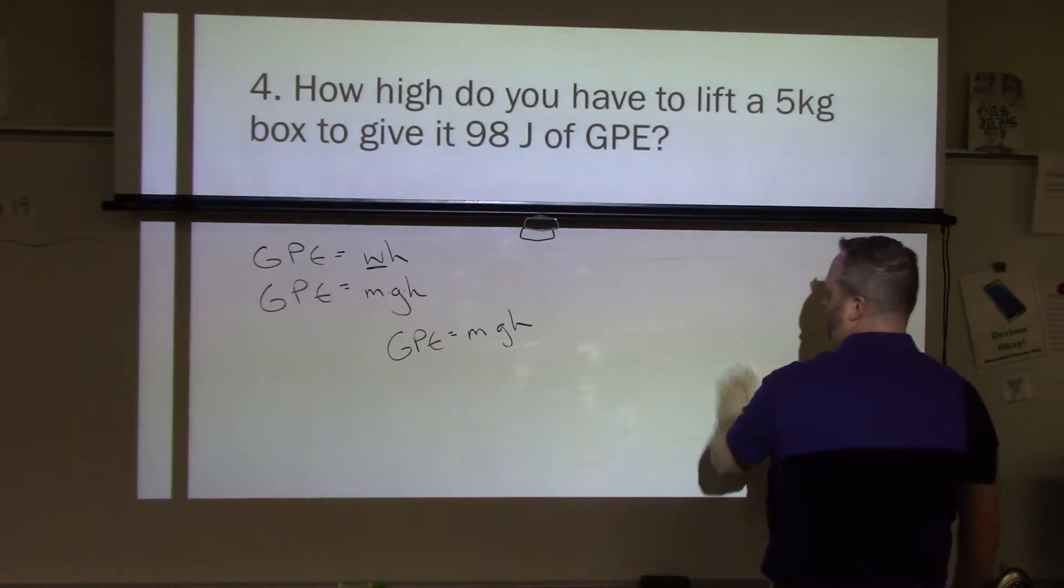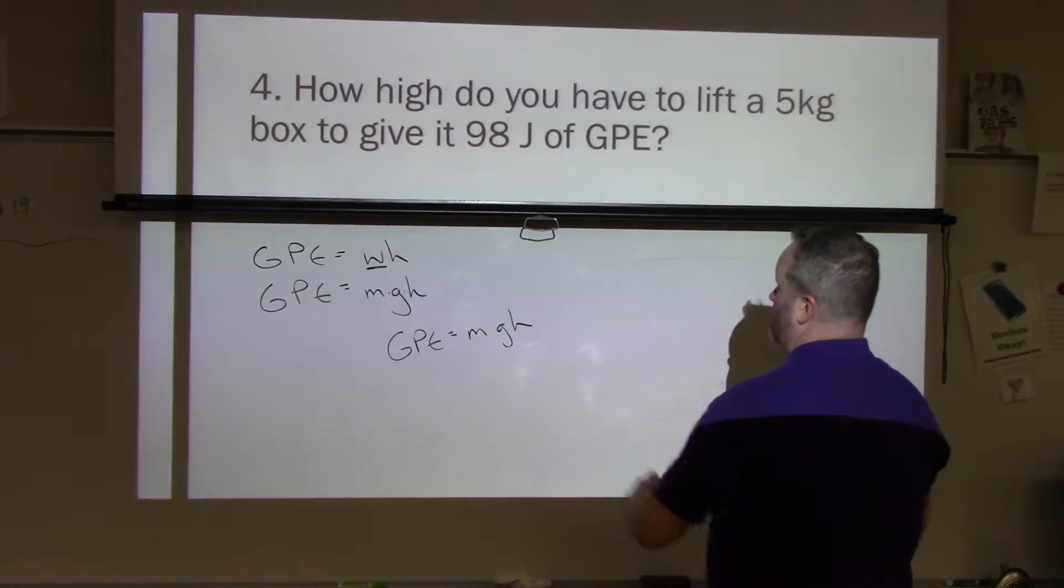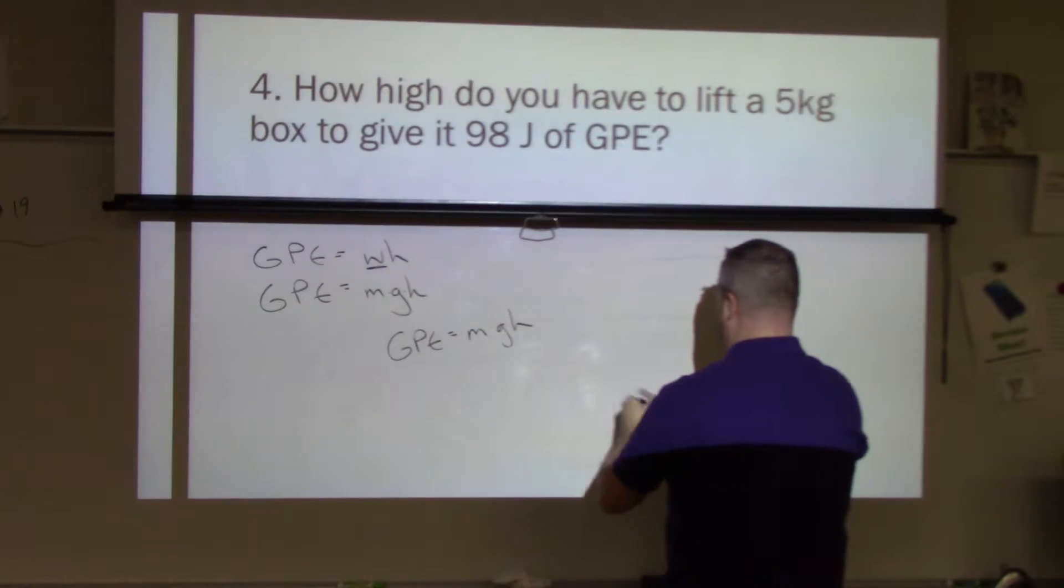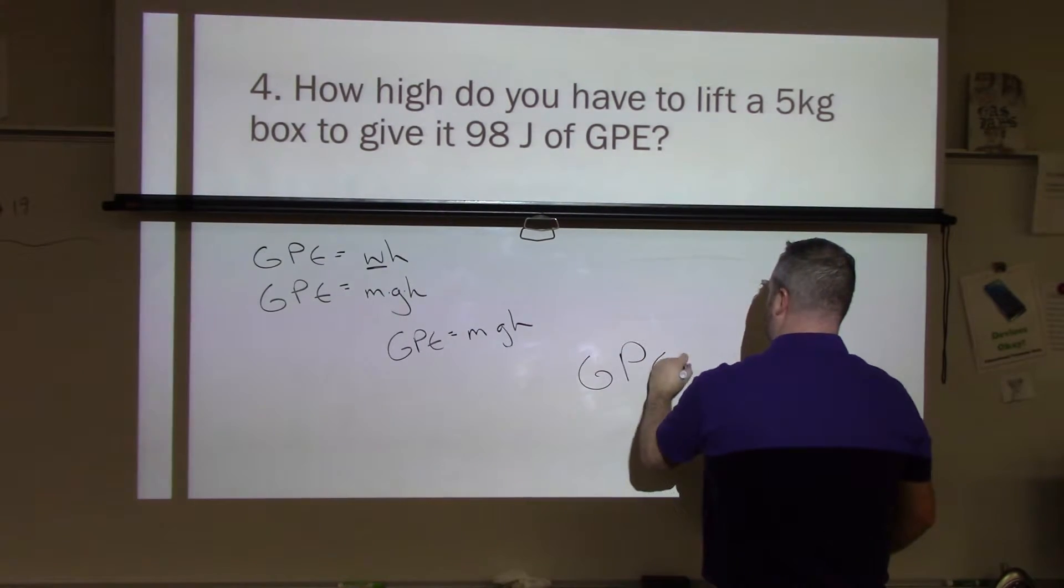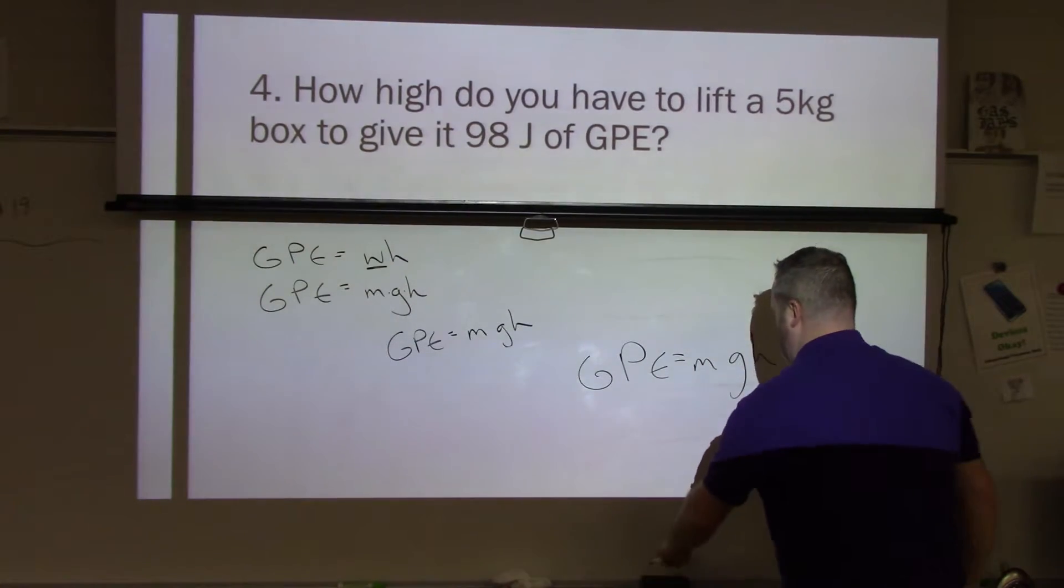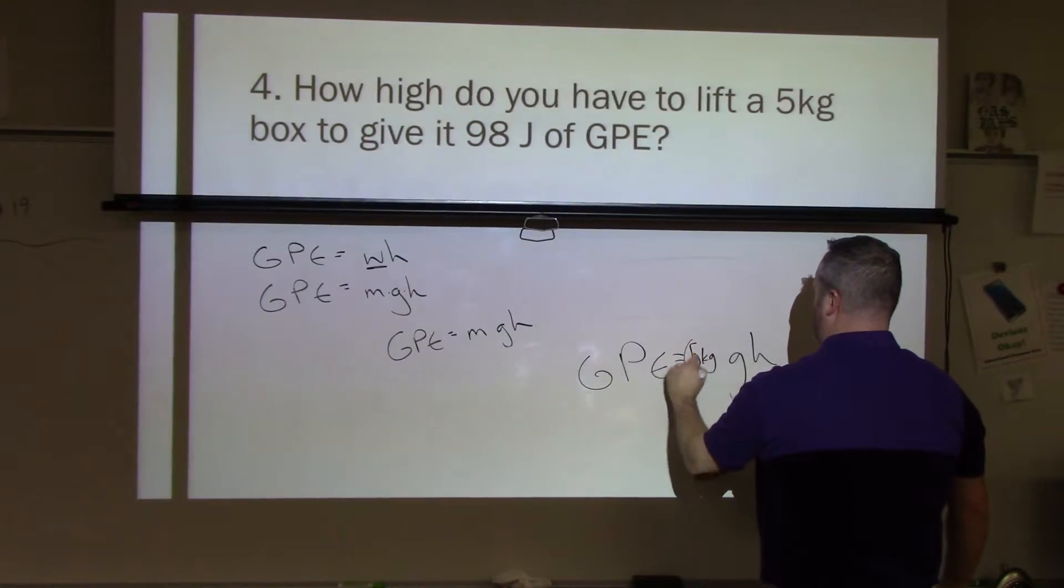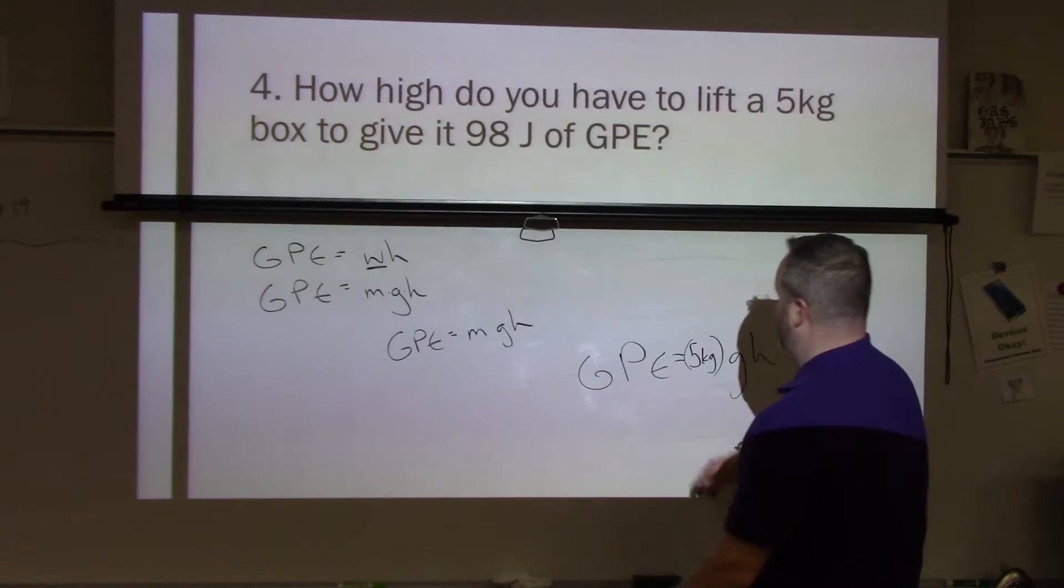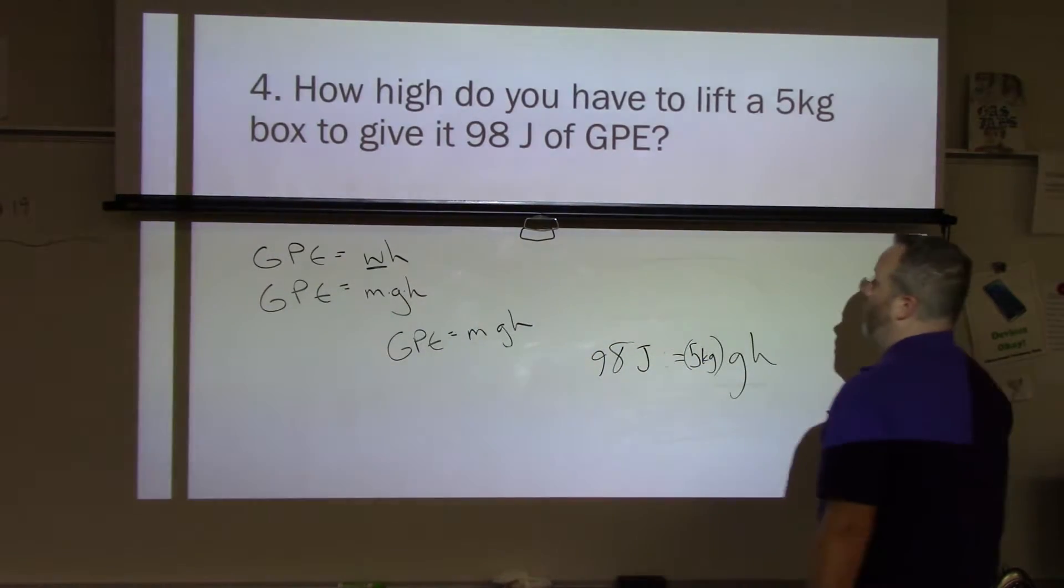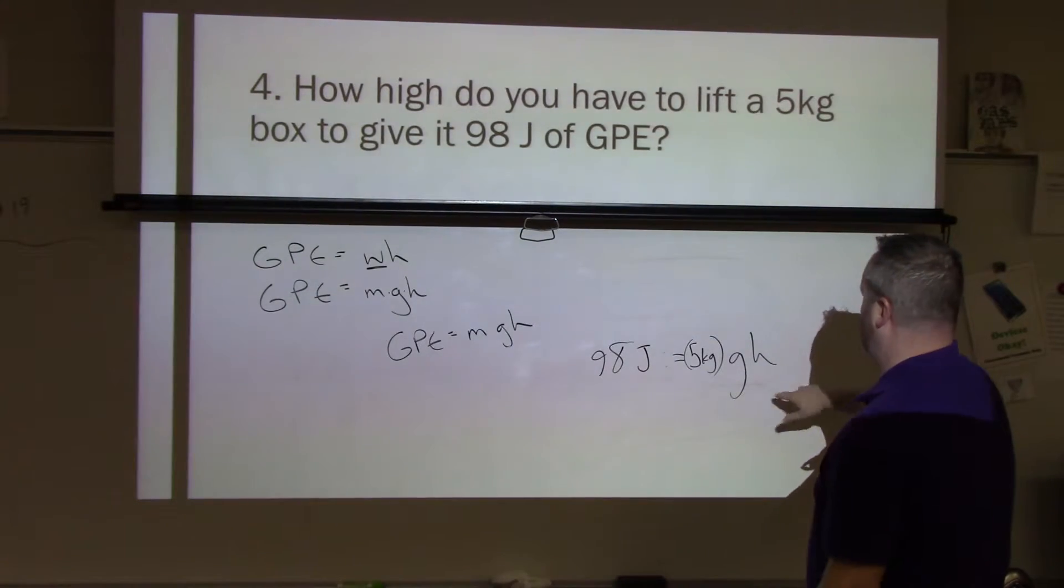So let's look at using this formula and replacing some of those variables with what we know. So let me just write the formula out over here. We know that we have five kilograms, so I'm going to go ahead and change this to five kilograms. We know that the energy is 98 joules. We know that, yeah, that's all we know. But we do know gravity.